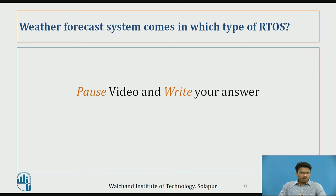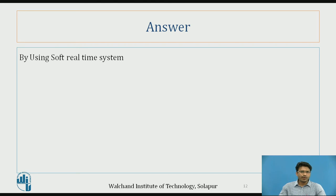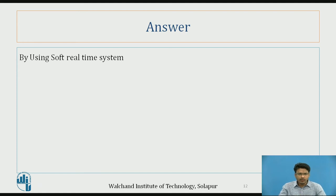Now let's look at a question. We have learned what hard real-time and soft real-time systems are. Tell me: which type of RTOS does a weather forecast system belong to? Pause the video and write your answer. The answer is: soft real-time system. Because in a weather forecast system, some delay is acceptable — checking the weather at 10 a.m. gives certain results, and checking again at 10:05 a.m. may give different results. Such minor variation and delay is acceptable, making it a soft real-time system.